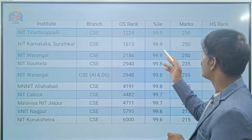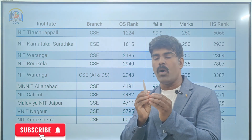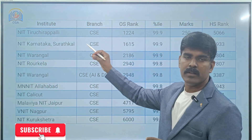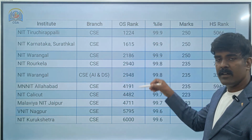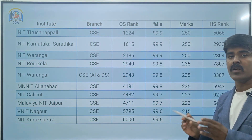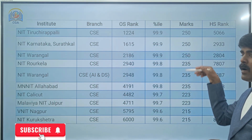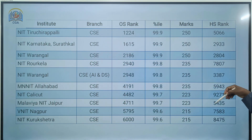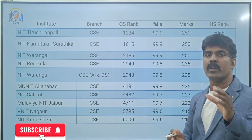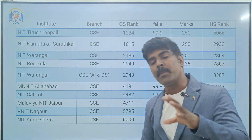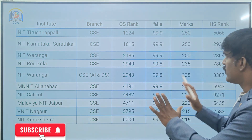If you are at 99-plus percentile — 99.9 — this presentation will show you the Institute name, Branch name, outside state rank (that is the common rank), outside rank, general rank, percentile, marks, and home state rank. There is a difference between home state rank and outside state rank. If you are in NIT, there is no home state quota — only the common rank applies.